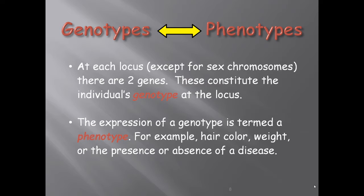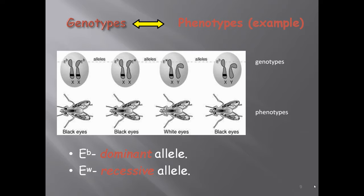At each locus, except for the sex chromosomes, there are two genes, and these constitute the individual's genotype at that locus. The expression of the genotype is called the phenotype — for example, hair color, weight, or the presence or absence of a disease. The genotype is the particular arrangement of genes at a locus, and this is expressed as the phenotype.